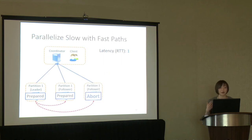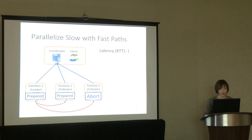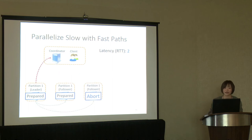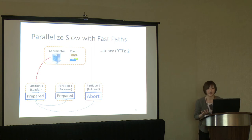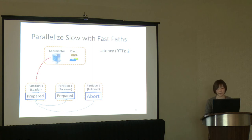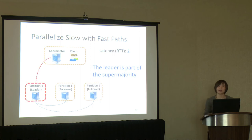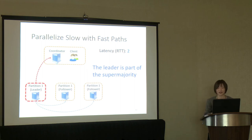Instead, in Carousel we are able to run the slow and the faster paths at the same time. If the faster path fails, the coordinator can get the slow path result in just two roundtrips instead of three. This required us to modify our consensus protocol. Specifically, if the faster path succeeds, it will always return the same result as the slow path. We do this by requiring the leader to be part of the supermajority — the faster path only succeeds when the leader is part of the supermajority. There are many common cases to handle and the details can be found in the paper.